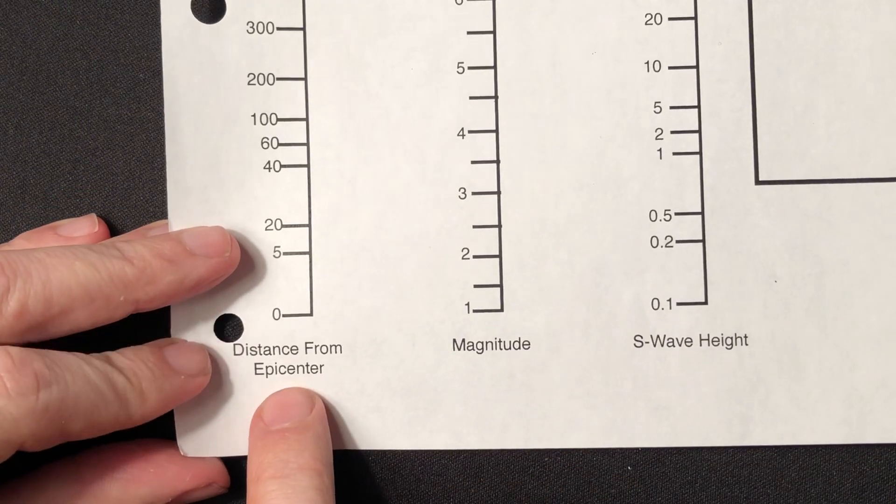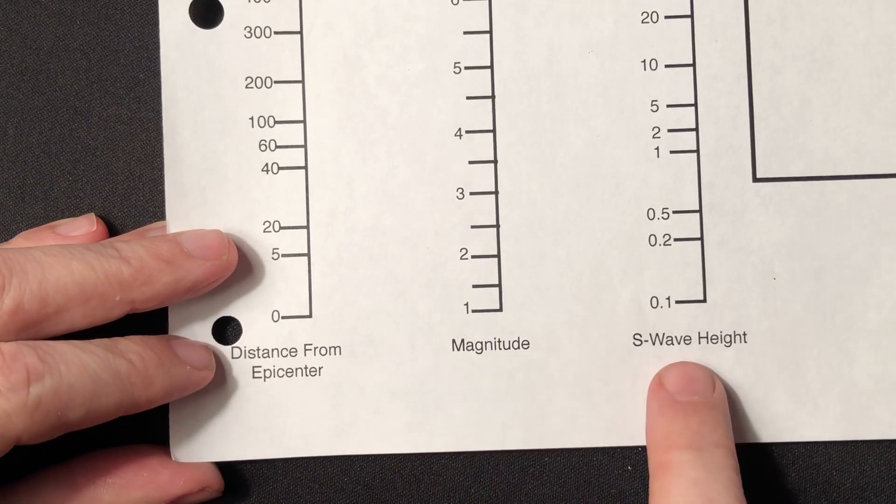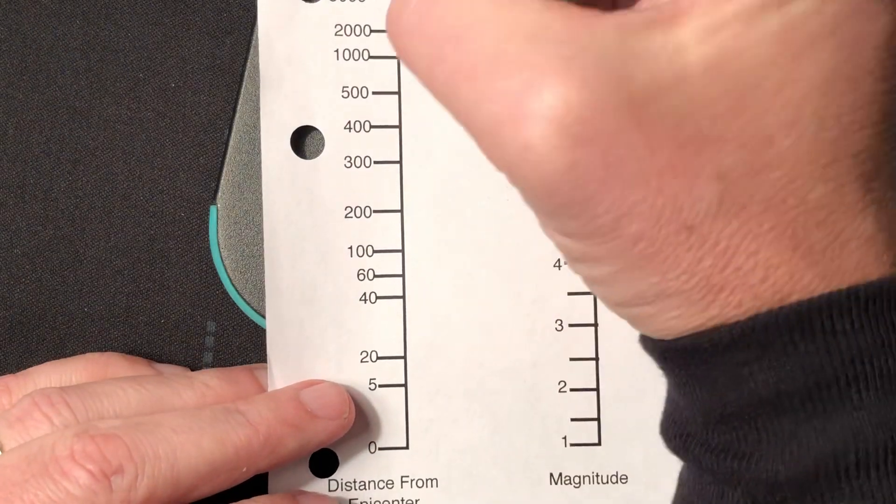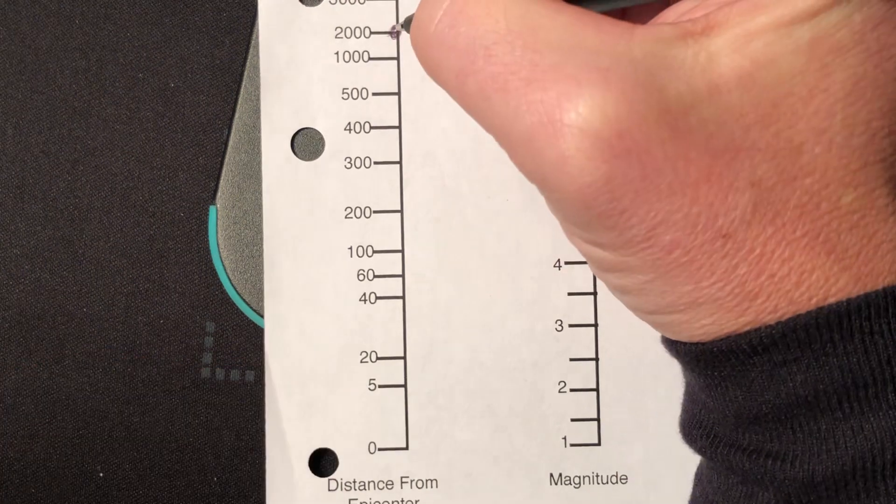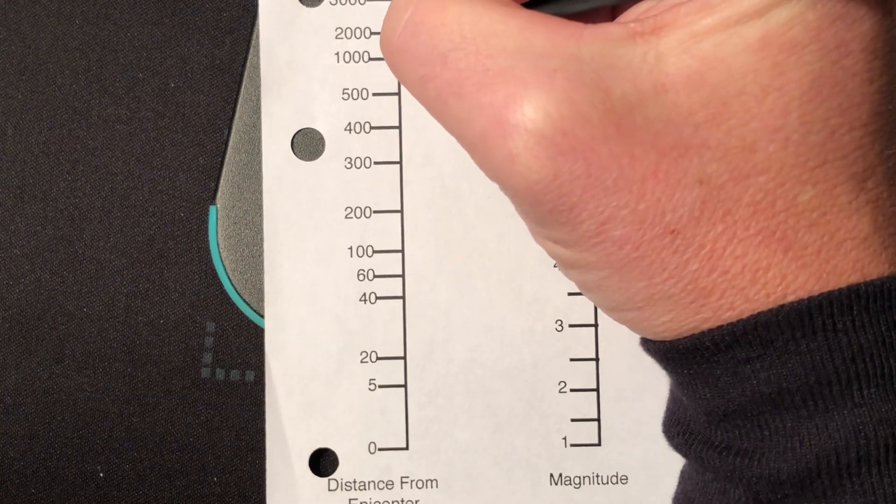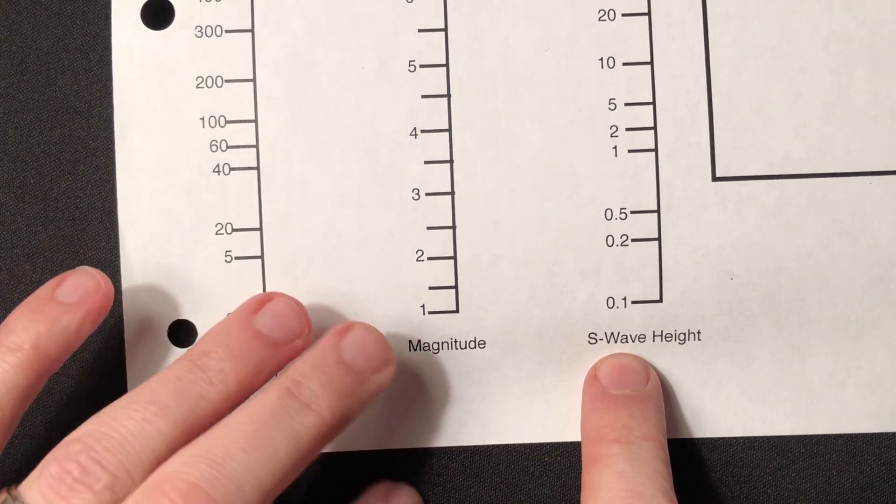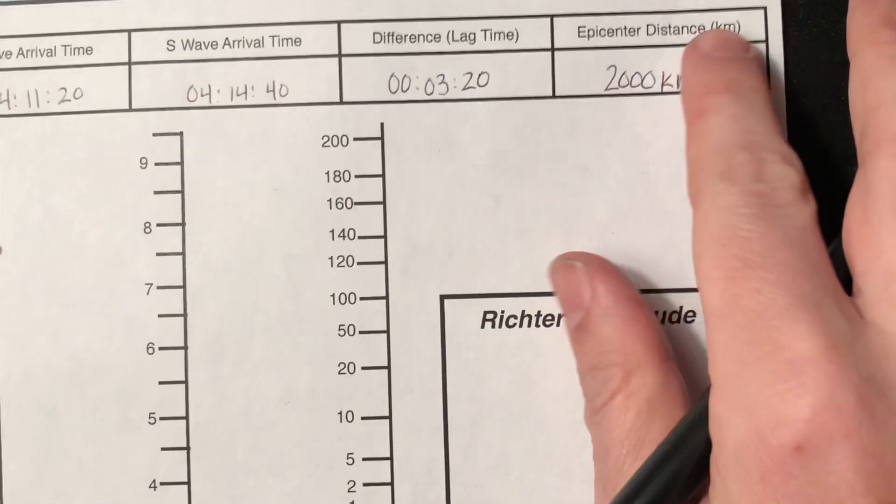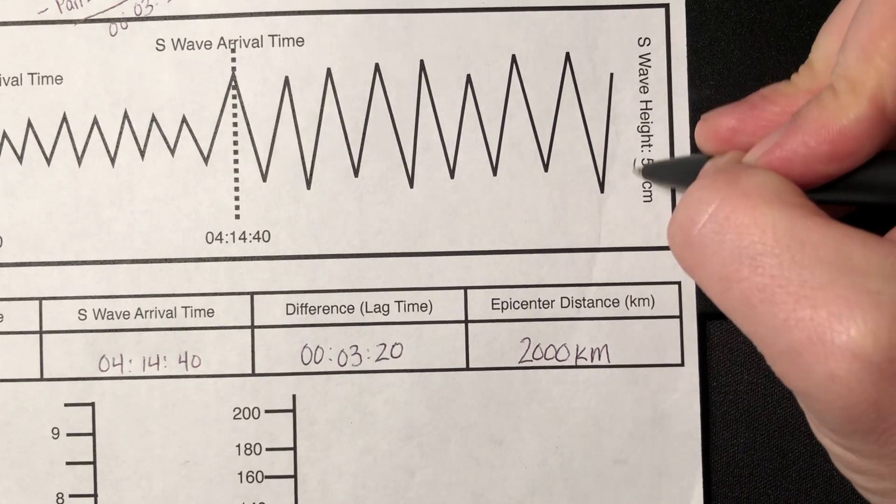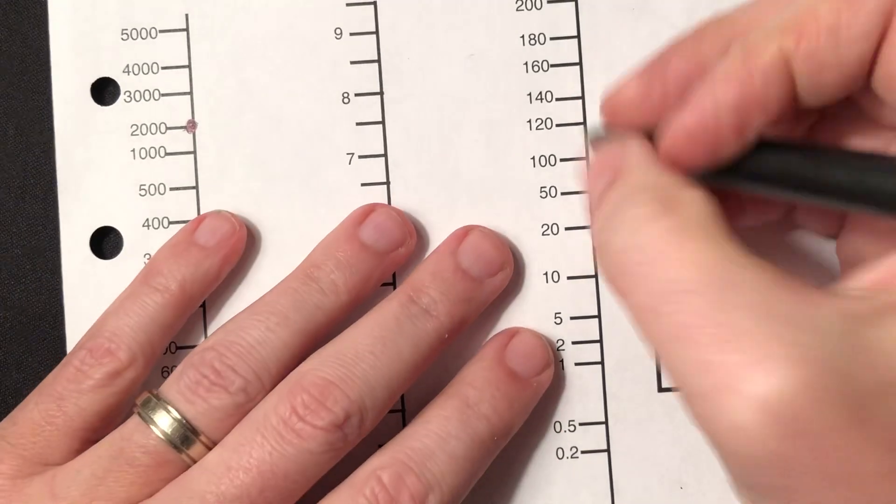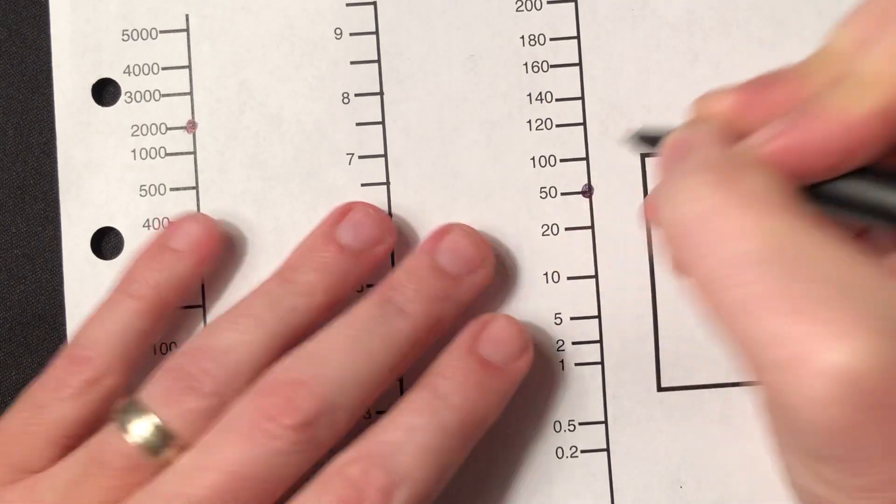So I have three scales. I have a scale over here from epicenter distance. I have one for the magnitude and one for the S-wave height. So my 2,000, I'm going to mark it right here. Put a dot right there. So I put a mark right on the 2,000. I want the Richter magnitude, but in order to get the magnitude, I need my S-wave height. And my S-wave height, that's called amplitude, is going to be right here, 50 centimeters. So I'm going to put a dot at the 50 centimeter mark for my S-wave height.